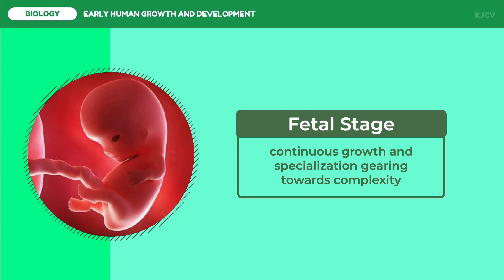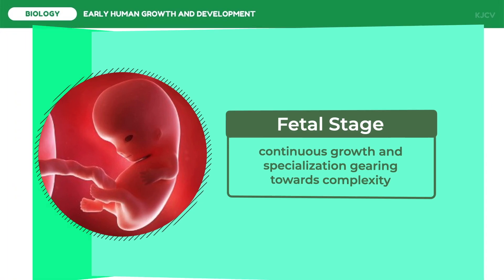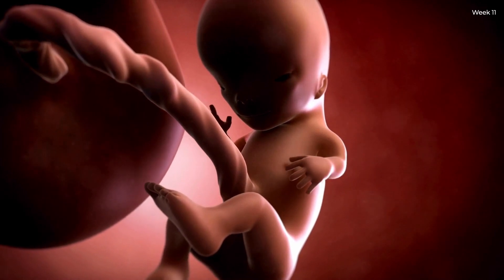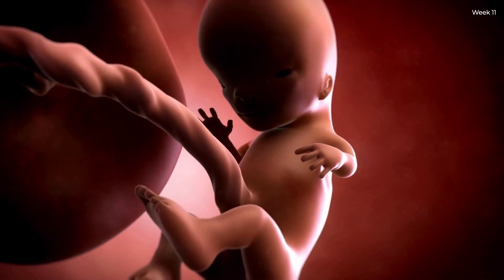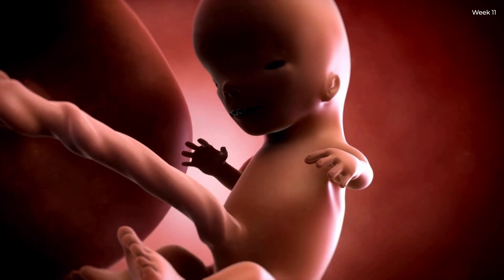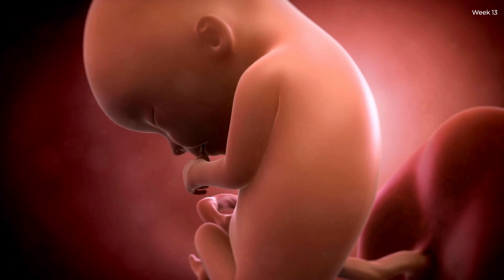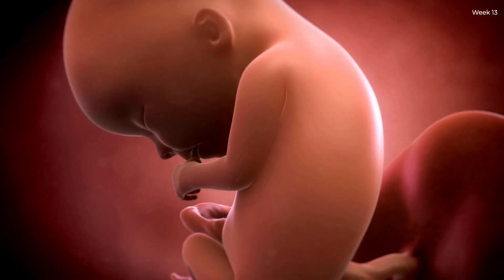Following embryonic development, the fetal stage begins from the ninth week after fertilization, usually at two months of pregnancy, and continues until birth. The fetus is characterized by the presence of all major body organs, though they will not yet be fully developed and functional, and some are not yet in their final anatomical location. At week 11, hands and feet are placed in front of the body with individual fingers and toes, nail beds are developing, and bones start to become hard. Week 13 marks the end of the first trimester.